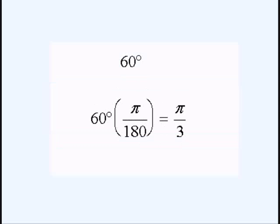So, to convert it over into radians, we multiply it by pi over 180. So, 60 degrees times pi over 180 turns out to be pi over 3 when we reduce.